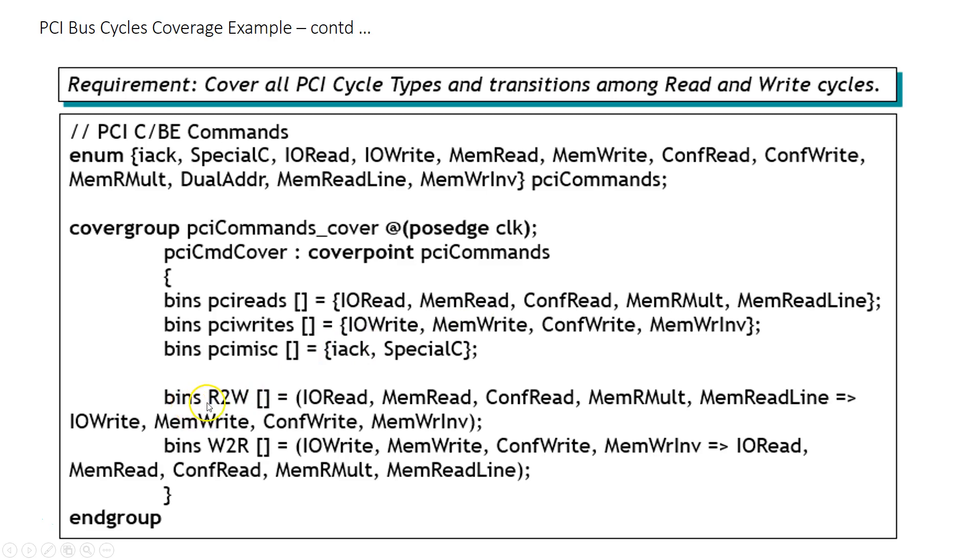So that is what we are doing here. So I am creating two more bins, bins read to write and bins write to read. And here what I am doing is I am specifying all the read cycles followed by all the write cycles. And just like what you saw in the previous slide, what this is going to do is make sure that you have covered, for example, IORead to IOWrite, IORead to MemWrite, IORead to ConfWrite, IORead to MemWriteInvalid. And then it will continue on with MemRead to IOWrite, MemRead to MemWrite, MemRead to ConfWrite and MemRead to MemWriteInvalid, and so on and so forth. Only when all these transitions have been exercised by your testbench will this bin R2W be considered covered.